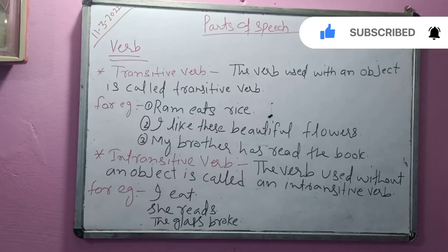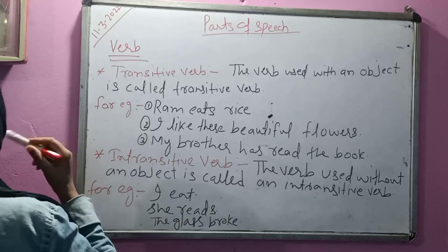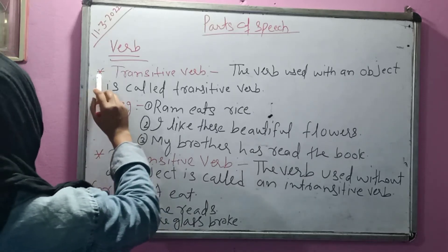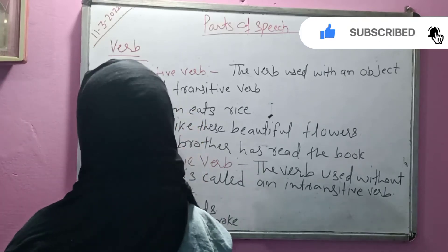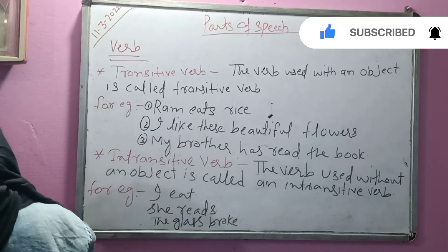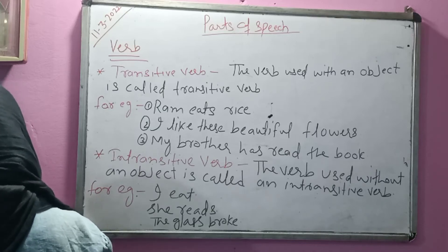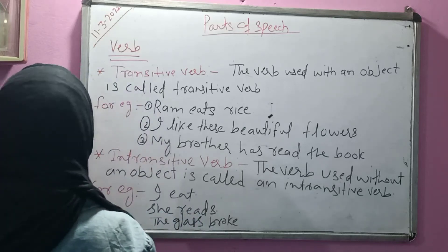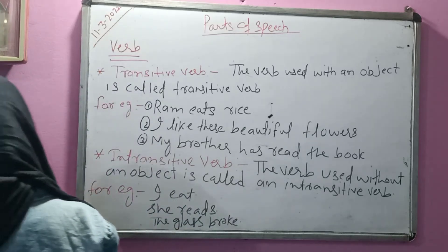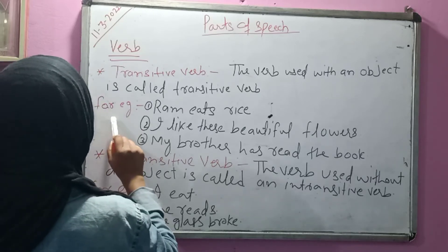Today we will study transitive verbs and intransitive verbs. A transitive verb is a word used with an object. The verb in which one object is used is called a transitive verb.